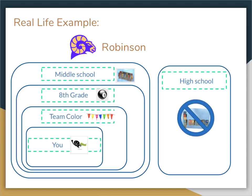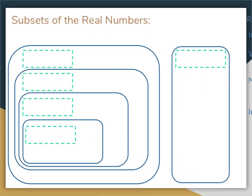Now let's replace these titles with the actual titles of the real numbers and talk about what characteristics put those in their categories. Here we are again with the same chart that looked like our Robinson chart, but we're going to be talking about the subsets of the real numbers.